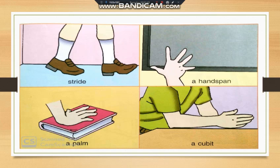Hand span means distance between the thumb and the little finger. Next is the palm — palm means which is made by using 5 fingers. And next is the cubit. This is also known as a unit of measurement.